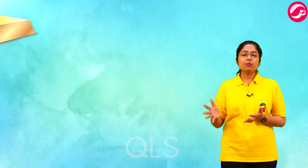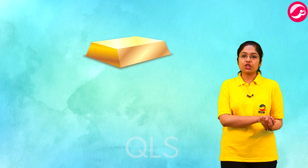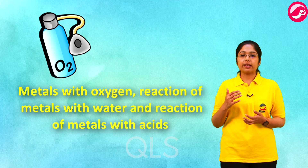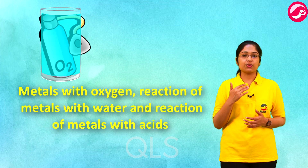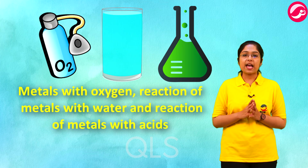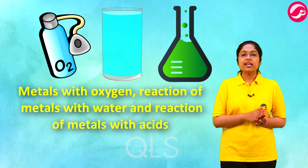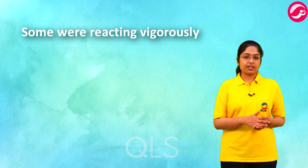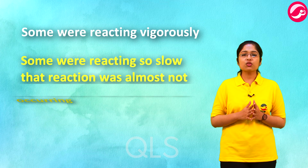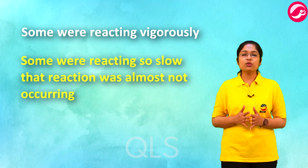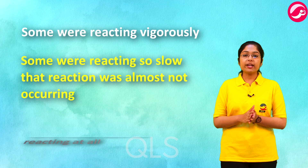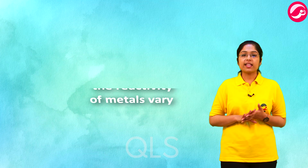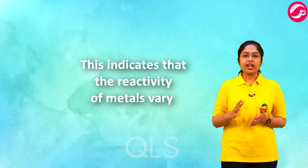Now let's see what happens when we expose two metals to each other. From the reactions of metals with oxygen, water, and acids, we have seen that all metals don't show the same level of reactivity. Some were reacting vigorously, some very slowly, and some not reacting at all — indicating that the reactivity of metals varies.